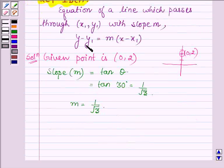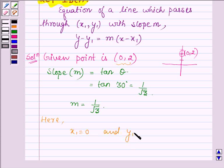And here the given point is (0, 2), so this implies x1 equals 0 and y1 equals 2.